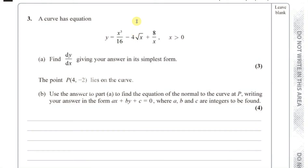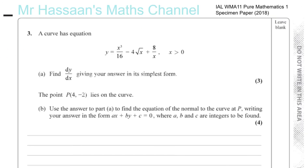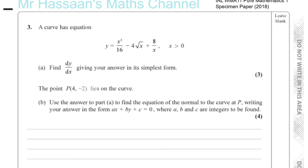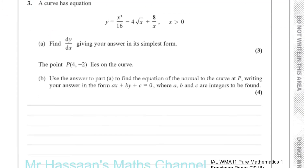For question number three from the specimen paper for P1 Pure One, we're told that a curve has an equation y equals x cubed over 16 minus 4 times the square root of x plus 8 over x, and we're told that x is greater than zero.